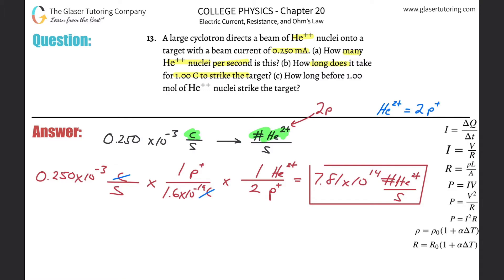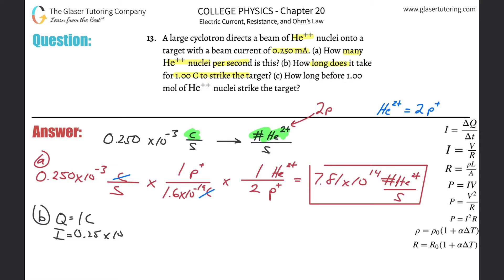So we can basically do a conversion here. We know the current that's flowing through. So basically, if all I knew was the total amount of charge — Q equals one coulomb — and I knew the current, which is 0.25 times 10 to the minus 3 amps, could we find out how long this takes? Sure. The current is equal to the change in the number of coulombs passing through divided by the change in time. To solve for time, just do a little cross multiplication.